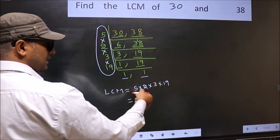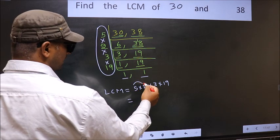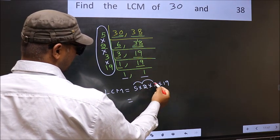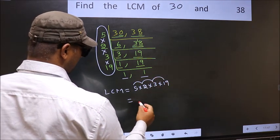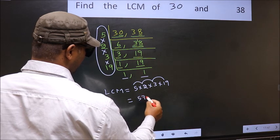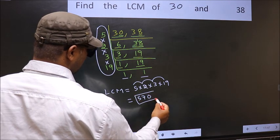So let us multiply these numbers. 5 into 2, 10 into 3, 30 into 19, 570 is our LCM.